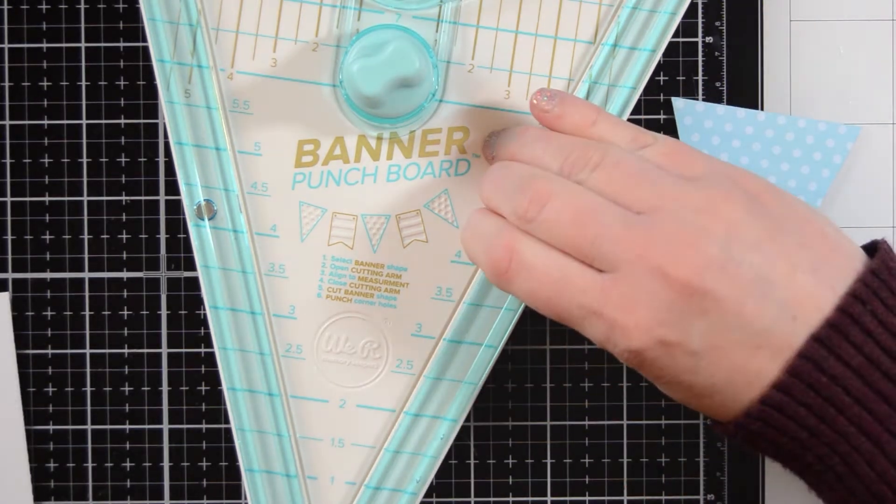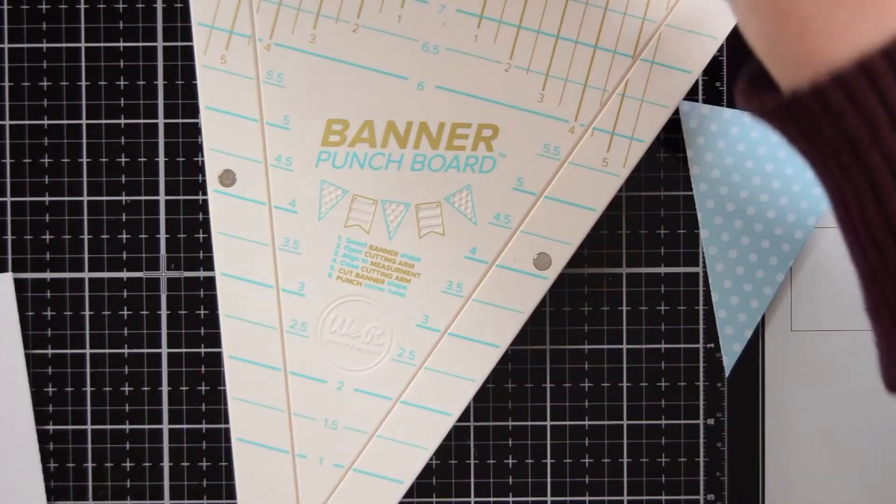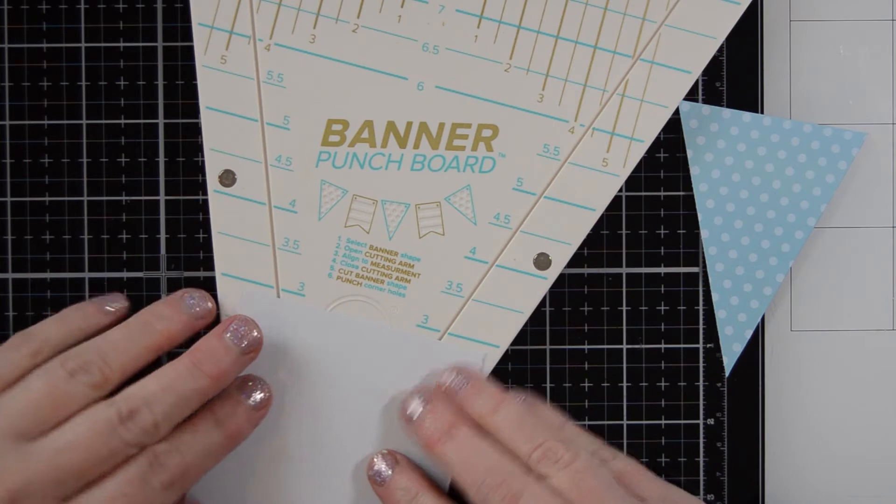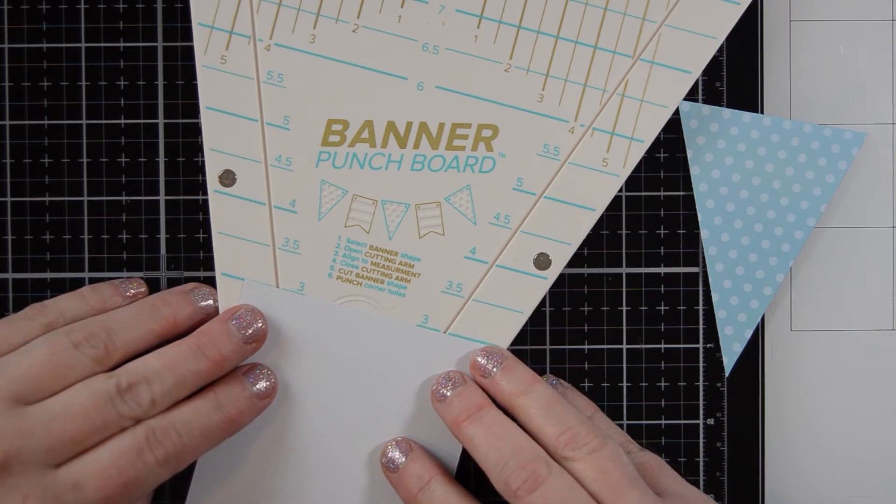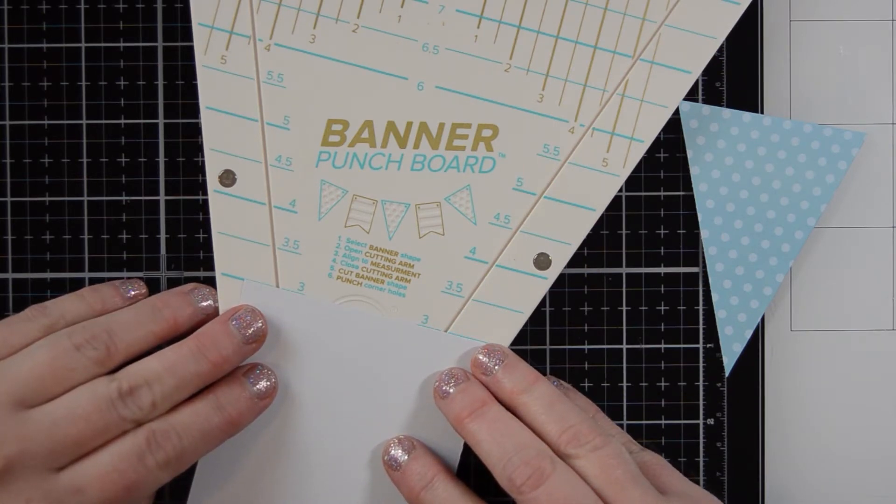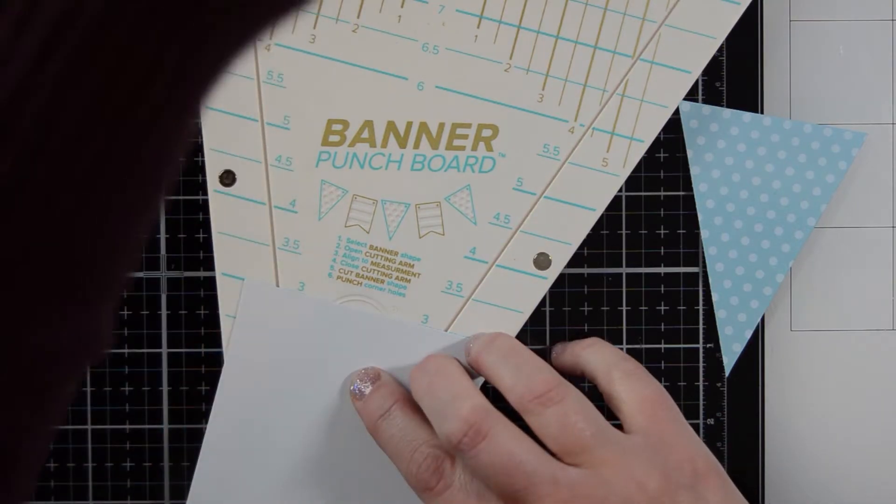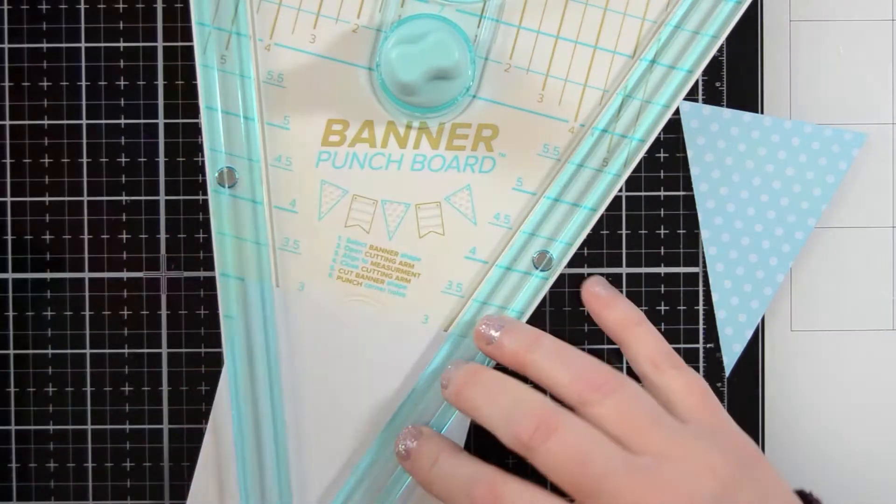So now I'm going to be layering that with a pearlescent white paper and I'm going to bring that down to three inches. So I'm just going to line that up. Same method as before. Then I'm going to put the arm down which will magnetize right down and then I will go ahead and cut that.